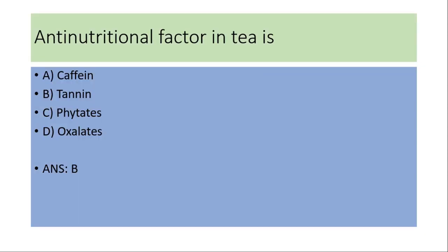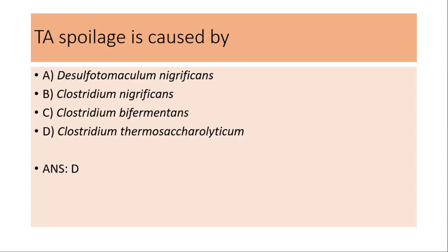Anti-nutritional factor in tea: (a) caffeine, (b) tannin, (c) phytates, (d) oxalates. The answer is (b) tannin.